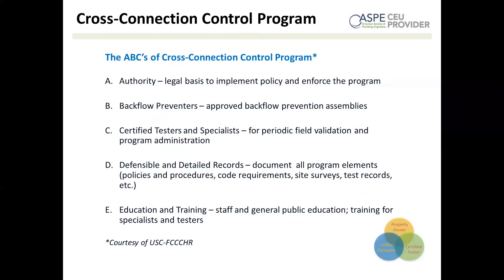B is backflow preventers — you need approved and appropriate devices to prevent backflow. C is certified testers and specialists: the people who will test and inspect the devices and cross-connections and administer the program. D is defensible and detailed records or documentation — this documents your policies, procedures, code requirements, site surveys, and test records, vital to enforcing the backflow program. E is education and training, just like we're doing today — including education of plumbing professionals and also the general public. This is courtesy of USC FCCCHR.